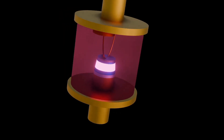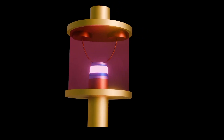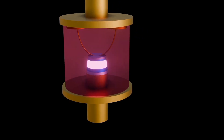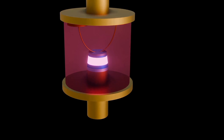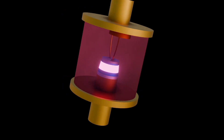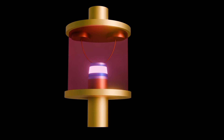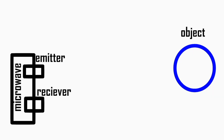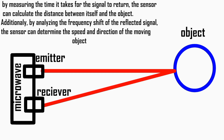Antennas are responsible for emitting and receiving microwave signals. They include horn antennas, patch antennas, and parabolic reflectors. Materials used include gallium arsenide, which is commonly used in microwave semiconductors due to its high electron mobility and frequency performance, and silicon, which is used in integrated circuits for microwave applications, offering a balance of performance and cost.